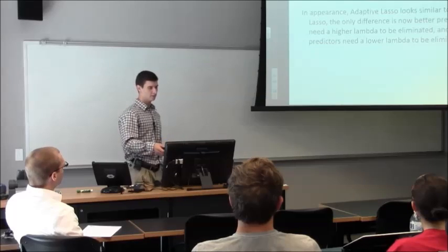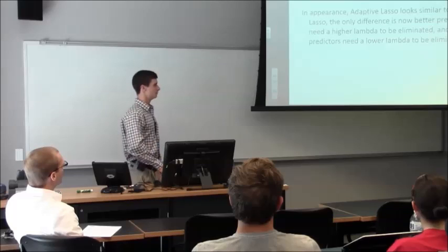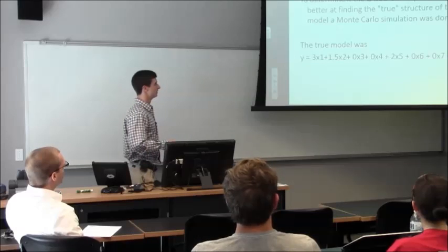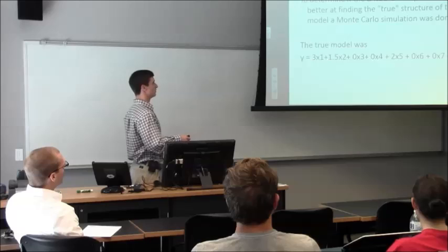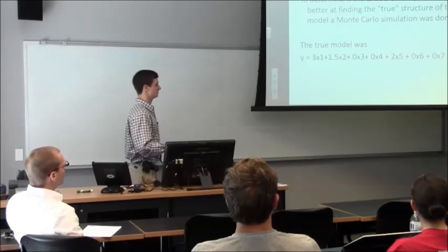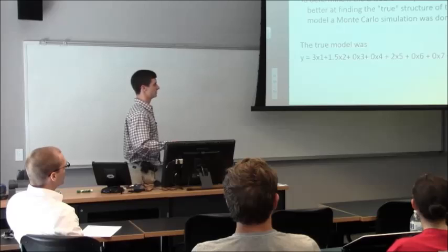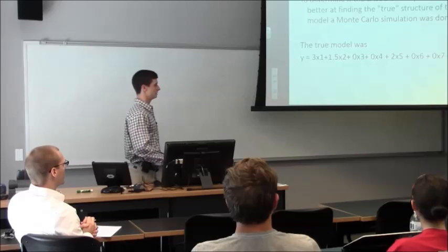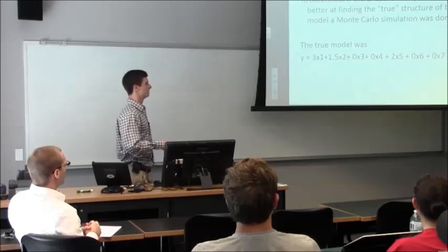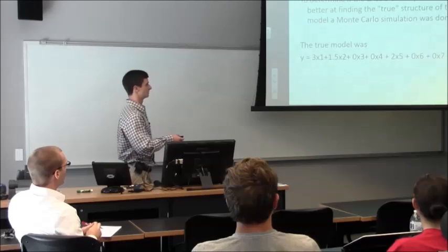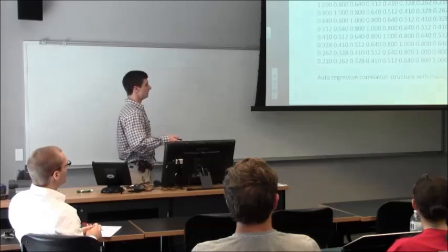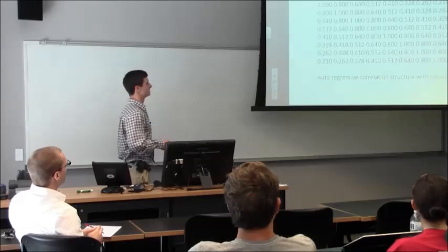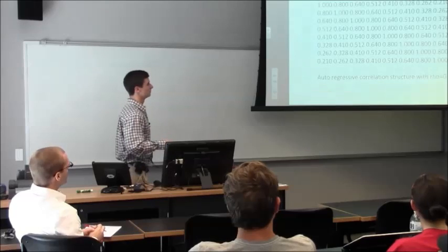And if I plotted it, it would look very similar to just Lasso. They would just converge earlier or before. Let me do a little simulation on it to determine if it's better at finding the true model. So the true model to this simulation was 3x1 plus 1.5x2 plus 0x3 plus 0x4 plus 2x5 plus 0x6 plus 0x7 and 0x8. And you kind of want to see, does your model pick out the x1, the x2, the x5, and eliminate some of the other ones that are 0? And we use the auto-regressive correlation structure with rho equal to 0.8. That's the correlation of your x's.